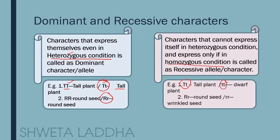The dwarf trait will express itself only in homozygous condition. Another example: capital R small r becomes a round seed — it does not become a wrinkled seed — but wrinkledness is able to express only in homozygous condition. So, recessive characters get suppressed in the presence of dominant characters.